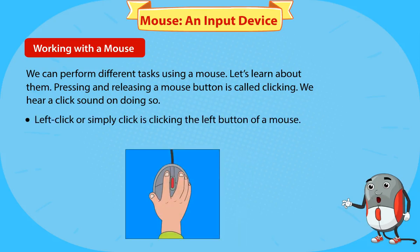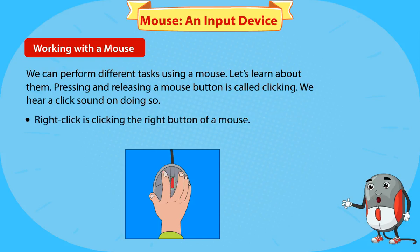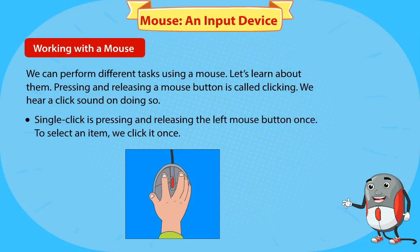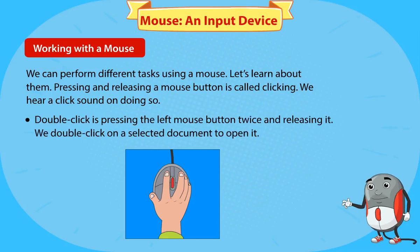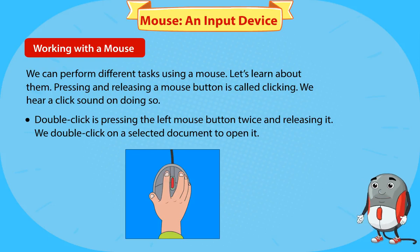Left click, or simply click, is clicking the left button of a mouse. Right click is clicking the right button. Single click is pressing and releasing the left mouse button once — to select an item we click it once. Double click is pressing the left mouse button twice and releasing it; we double click on a selected document to open it.